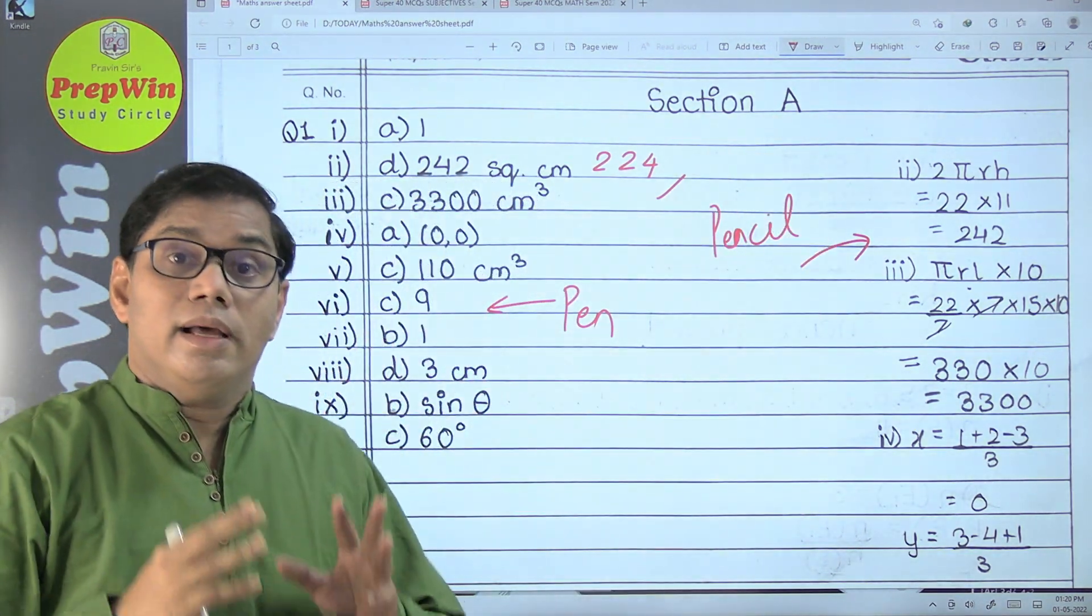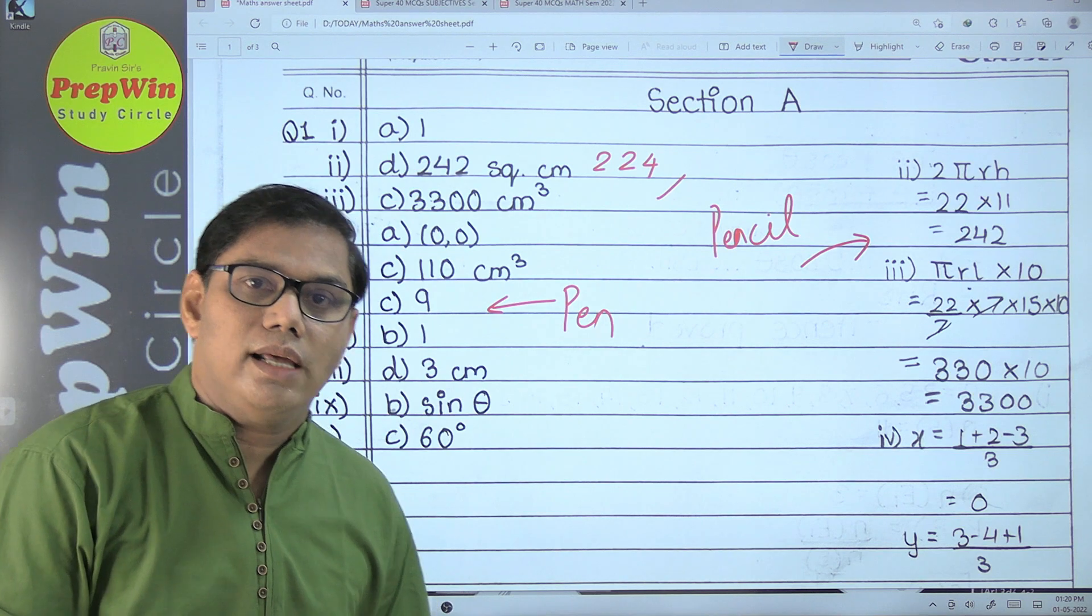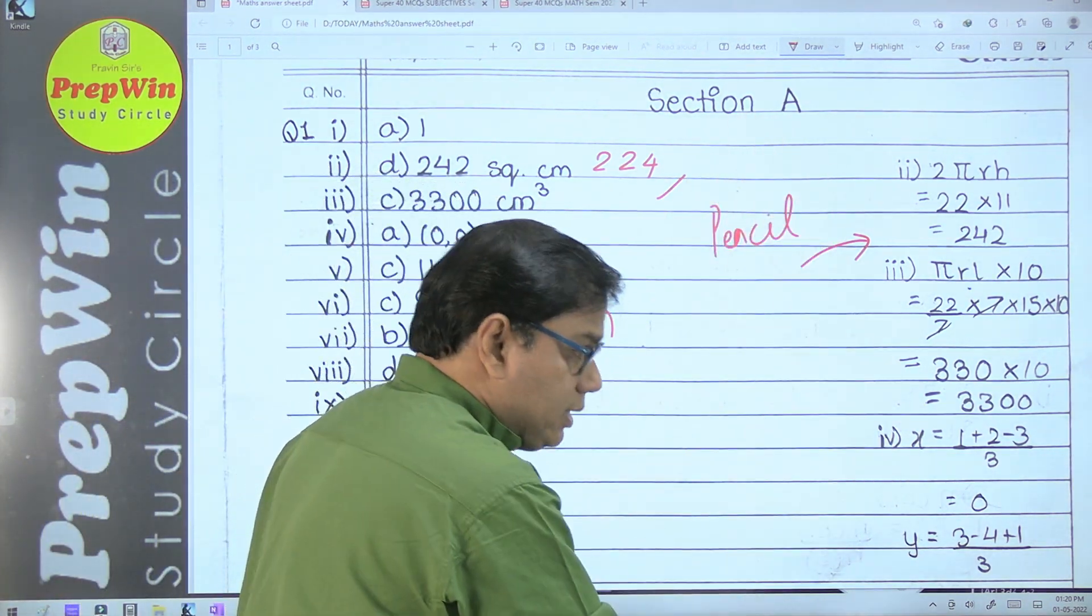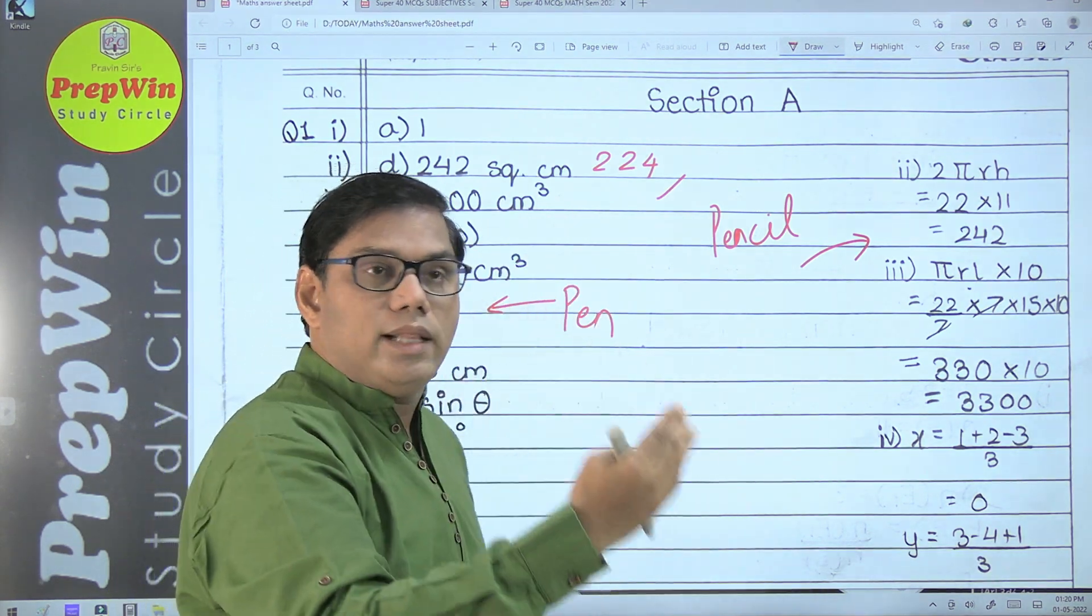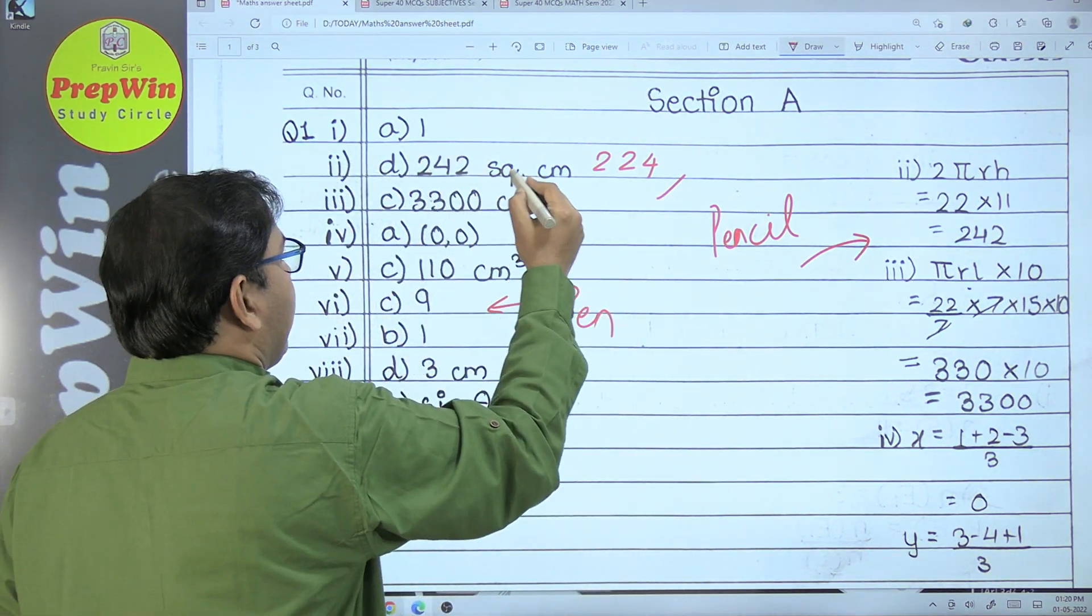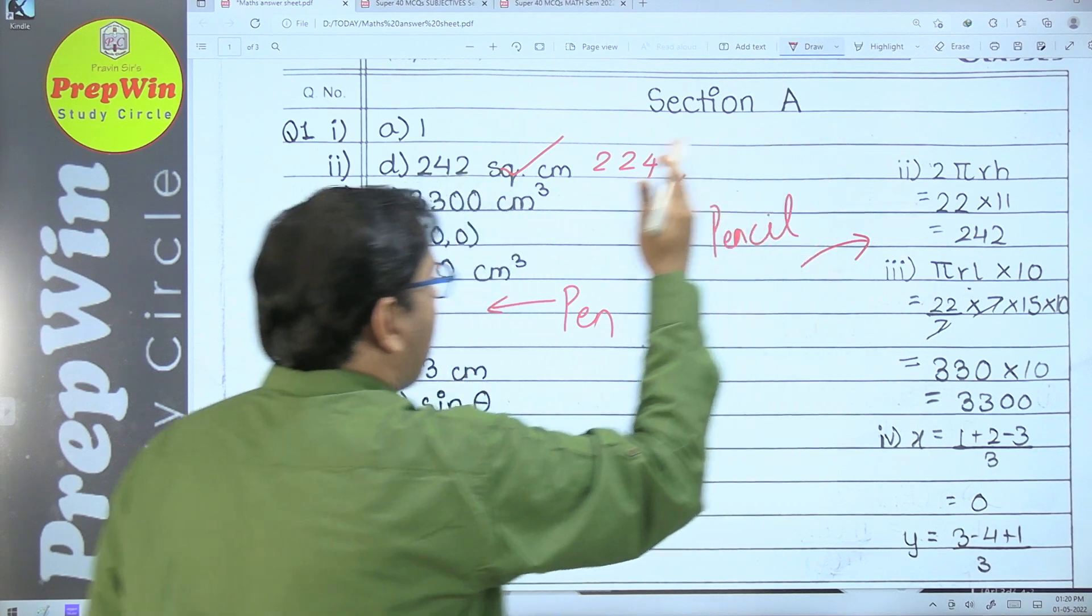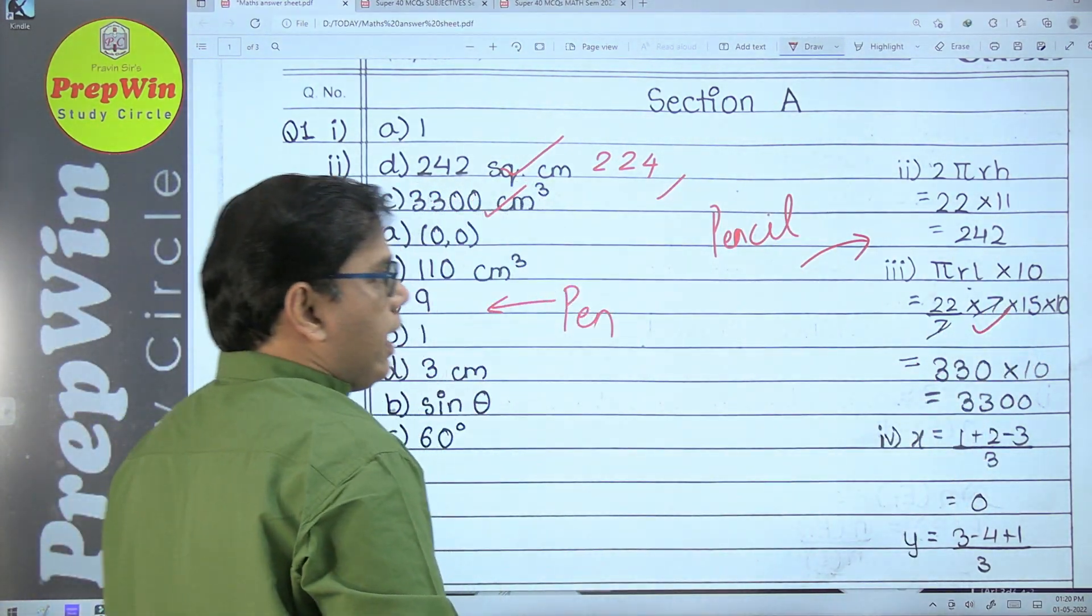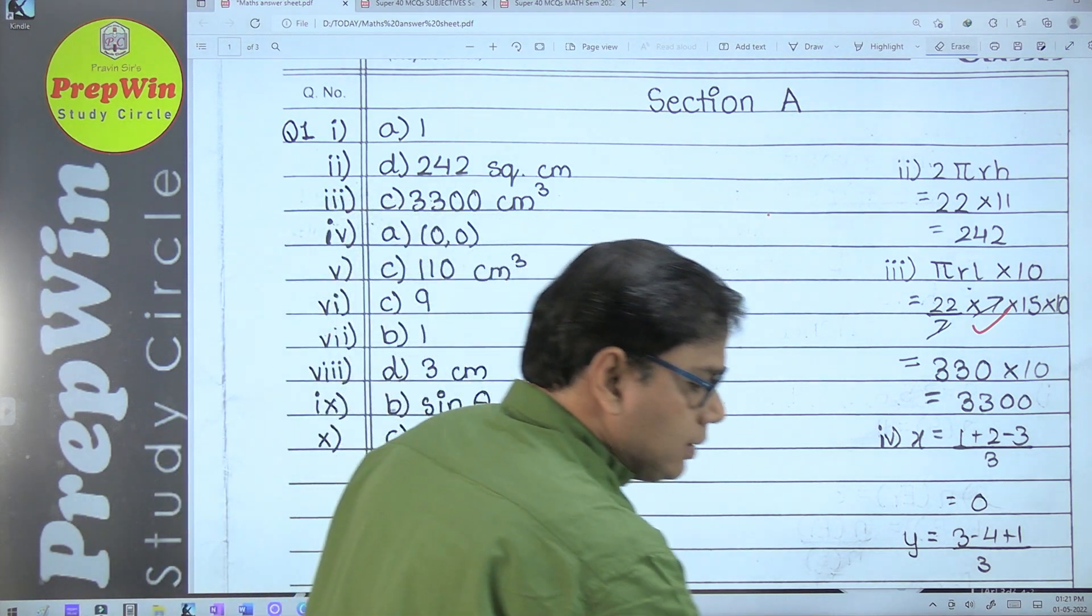That is the benefit of the working column. This is why I strongly recommend, strongly suggest that you don't do the working column at the bottom or end. When your teacher is correcting this answer, the working should be visible right there.